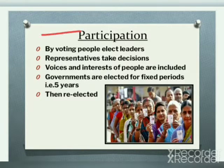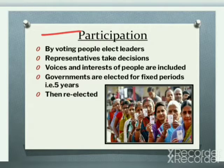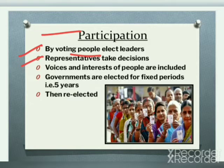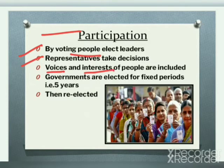Participation is the main key element of a democratic government. In democracy, people play an important role because supreme power lies with the common people, and these people elect their representatives through voting. These representatives take decisions on behalf of the people, keeping in mind the voices and interests of the people, because whatever they are doing, they are doing for the welfare of the people.